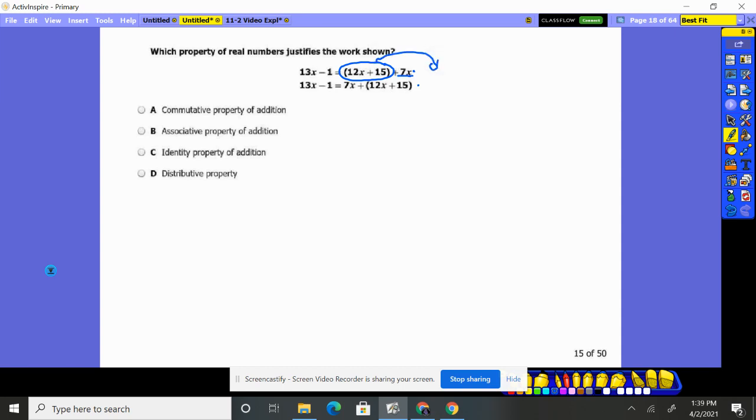See, here's your 7x. They took the 12x plus 15 and simply moved it over to the other side. So they did A plus B, and they moved it to the other side equals B plus A. That's the commutative property.